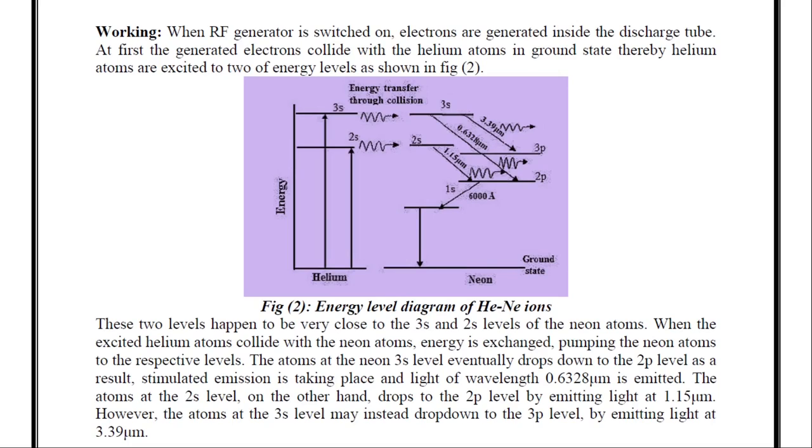Now, we will see the working of this helium-neon laser. When RF generator is switched on, electrons are generated inside the discharge tube. At first, the generated electrons collide with helium atoms in ground state. Thereby, helium atoms are excited to two energy levels as shown in figure 2. This is the energy level diagram of helium-neon ions. This energy level diagram is for helium and this is for neon.